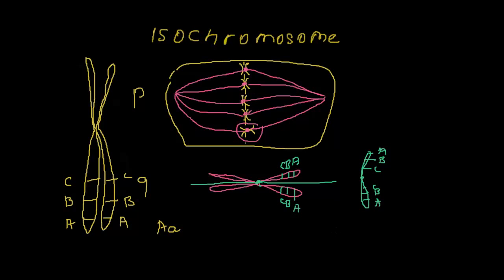So this is our Q arm that is duplicated. And here also Q arm, two long arms on one side. And on the other side of the cell we will have two short arms, P arms.